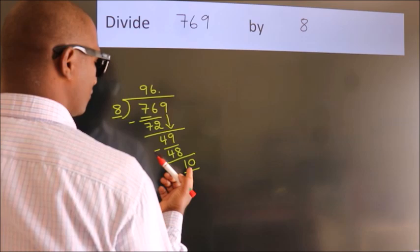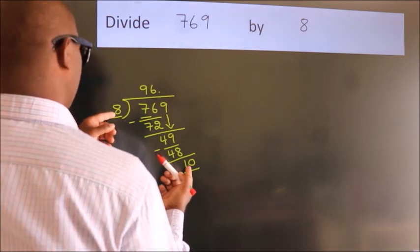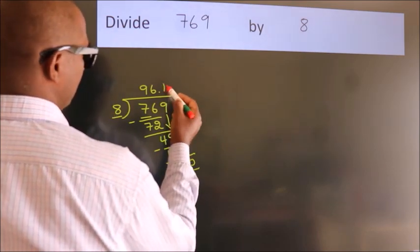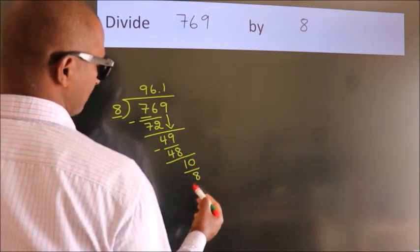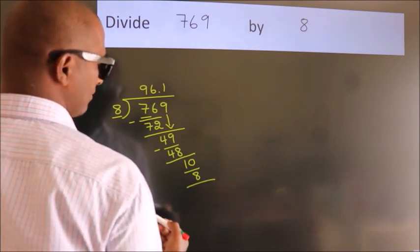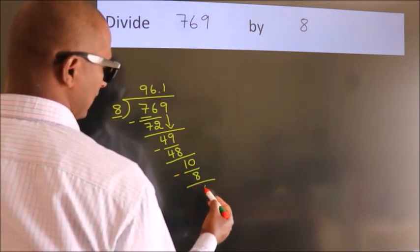A number close to 10 in the 8 table is 8 ones, 8. Now we subtract. We get 2.